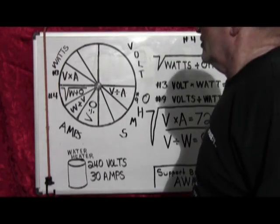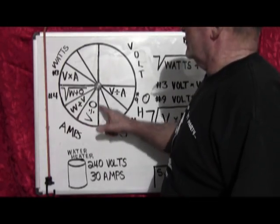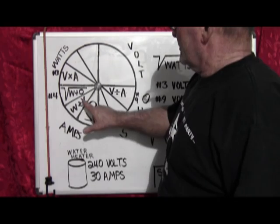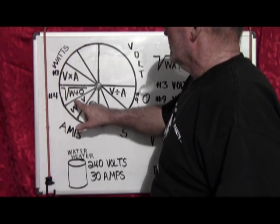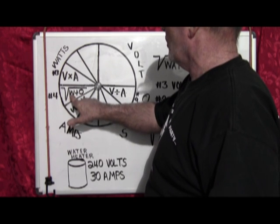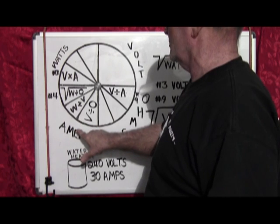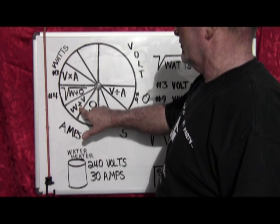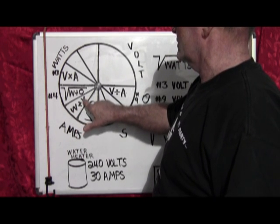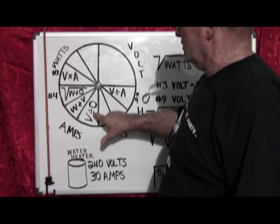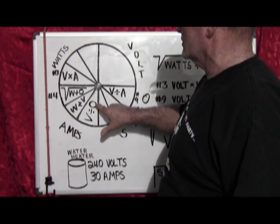In this episode we're going to go over the amps section of the pie chart and three equations. The square root of watts divided by ohms will give you amps. Watts divided by volts will give you amps, and volts divided by ohms will give you amps.